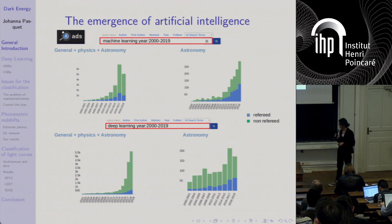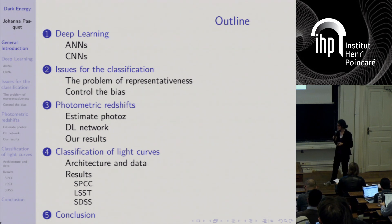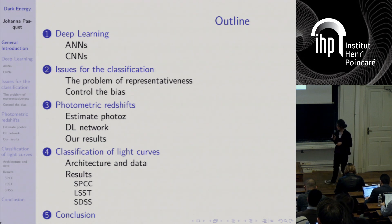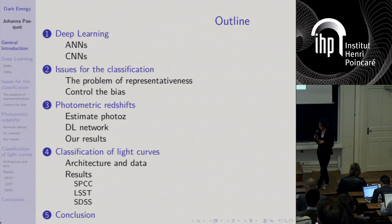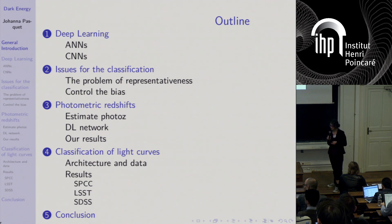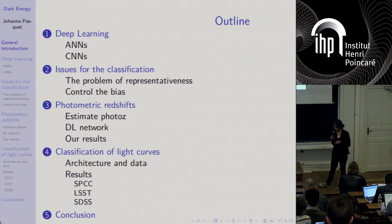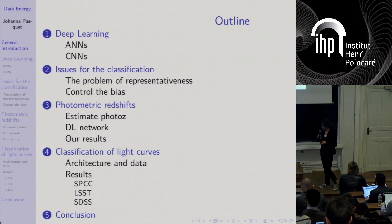I will first present some deep learning concepts and explain the type of architecture we developed, focusing on convolutional neural networks. Then I will present the different problems in classification, mainly the problem of non-representativeness. I will show a first application on photometric redshift without the representativeness problem, then an application on supernova light curve classification which contains several representativeness problems.